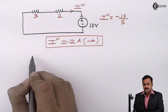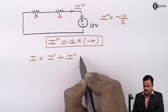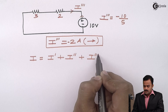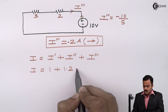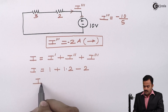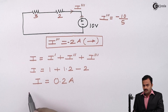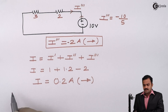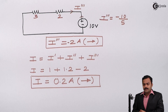Finally, as per the superposition theorem, the total current is the algebraic sum: I equals I dash plus I double dash plus I triple dash, which is 1 plus 1.2 minus 2, giving a final answer of 0.2 ampere. This positive result means the assumed direction for all three cases is the actual direction of the final current. So here we have completed yet another problem of superposition theorem. In subsequent videos, we will solve more numericals based on this. Thank you.